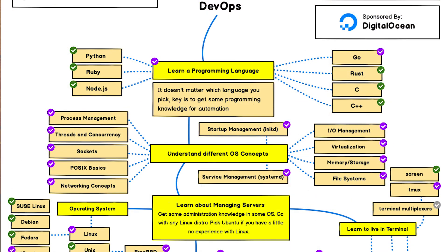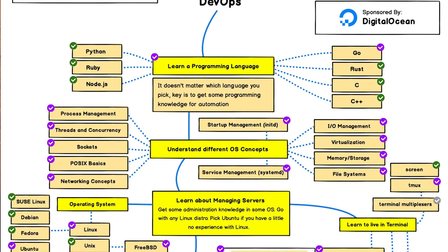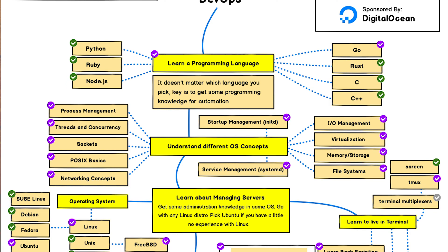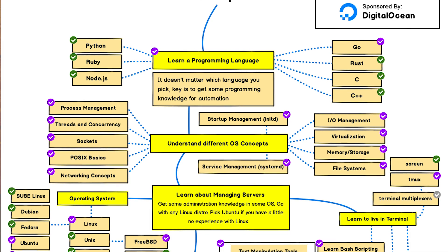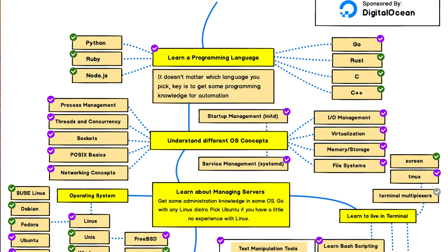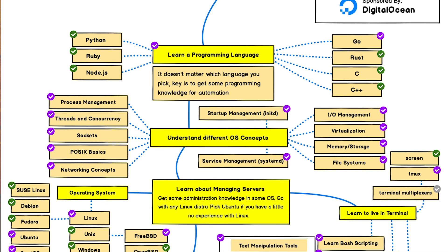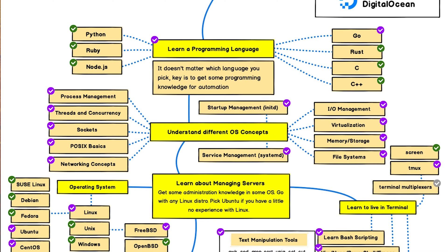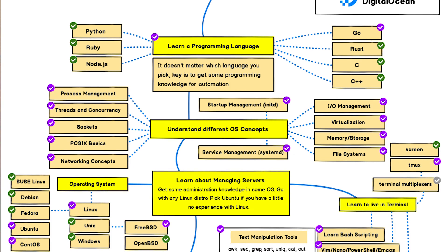The DevOps team should have a clear understanding of one or more programming languages as per your technology needs — like Java, Python, Go, Ruby, C, C++, and others. It doesn't matter which language you use; what's important is to gain programming knowledge for automation, since automation is the backbone of the DevOps philosophy.